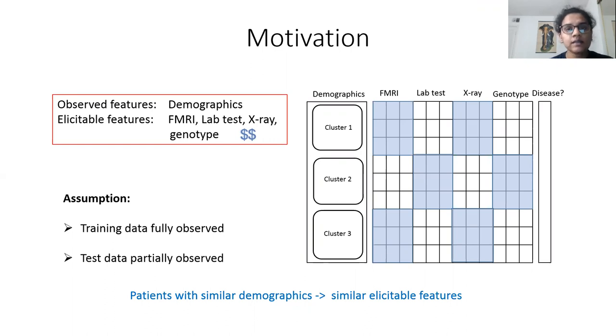Coming to the motivation of the work, let's imagine a medical setting where the task is to predict whether a person has a particular disease or not. We have two types of features: the observed features, which is the demographics that comes at no cost because they are easily available, and the elicitable features, which comes at a cost like MRI images, lab tests, x-ray data, and genotype data.